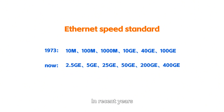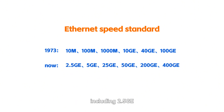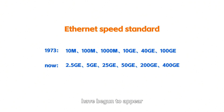In recent years, six new Ethernet speed standards, including 2.5GE, 5GE, 25GE, 50GE, 200GE, and 400GE, have begun to appear.